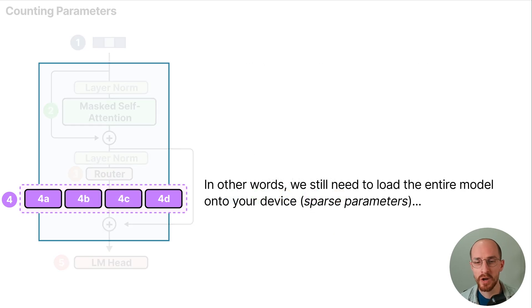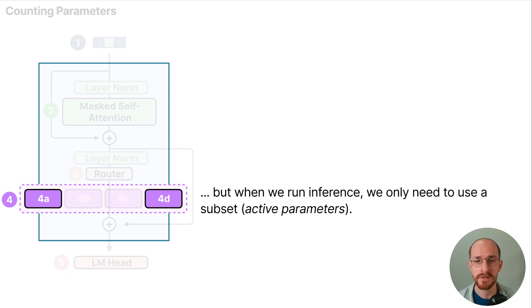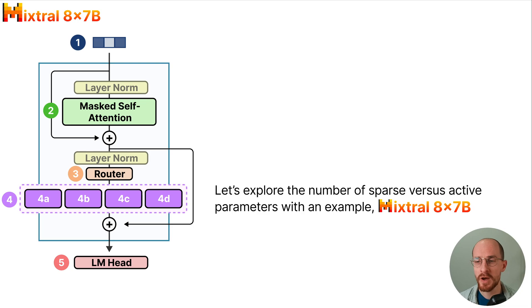In other words we still need to load the entire model onto your device, these are the sparse parameters. But when we run inference we only need to use a subset. We call these the active parameters. Let's explore the number of sparse versus active parameters with an example, Mixtral 8x7B.